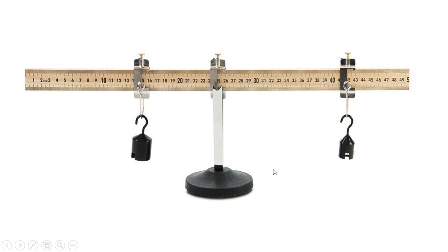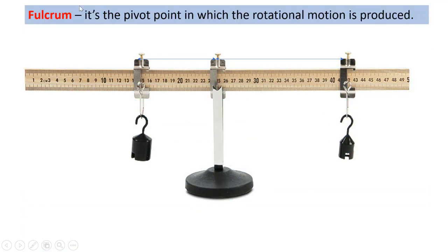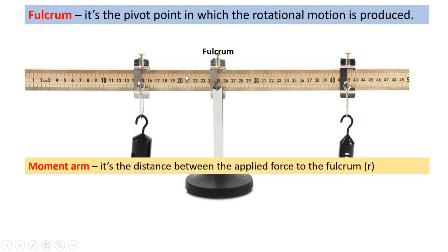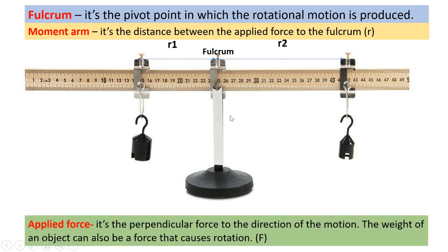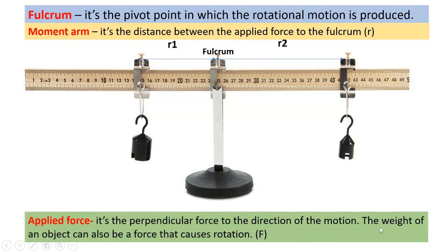A couple of terms to review before proceeding. The fulcrum is the pivot point at which rotational motion is produced — in this case, the section supporting the midi stick. The moment arm is the distance between the applied force and the fulcrum; here we have r1 for the first weight and r2 for the second. The applied force is the perpendicular force to the direction of motion.